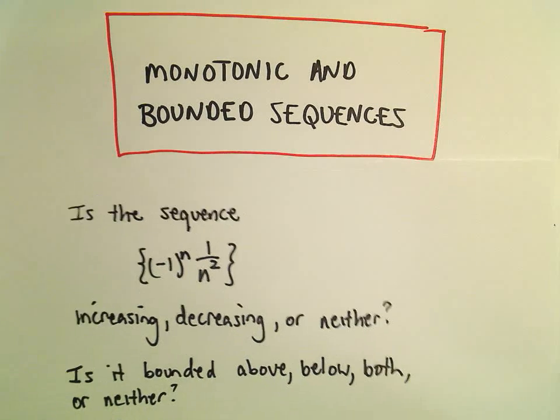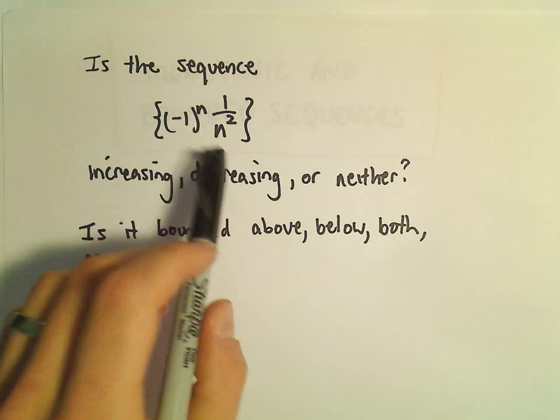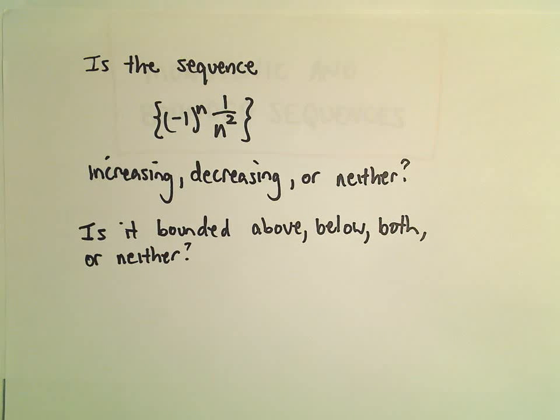All right, here we're going to look at a question related to a sequence. In this case, we're going to ask ourselves: is the sequence (-1)^n times 1/n^2 increasing, decreasing, or neither? Also, is it bounded above, below, both, or neither?